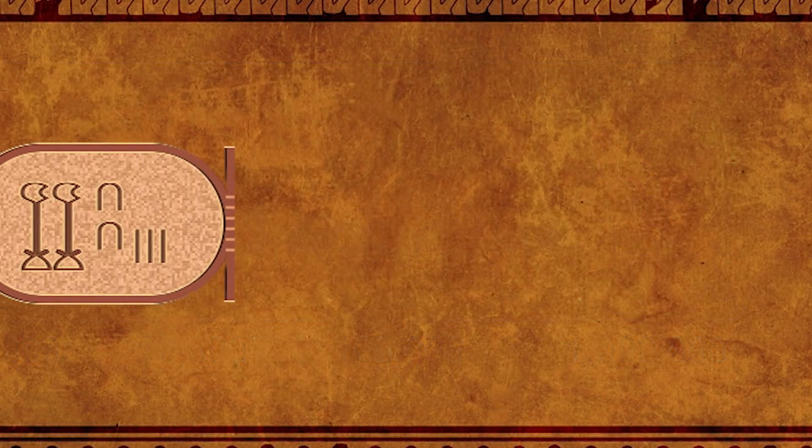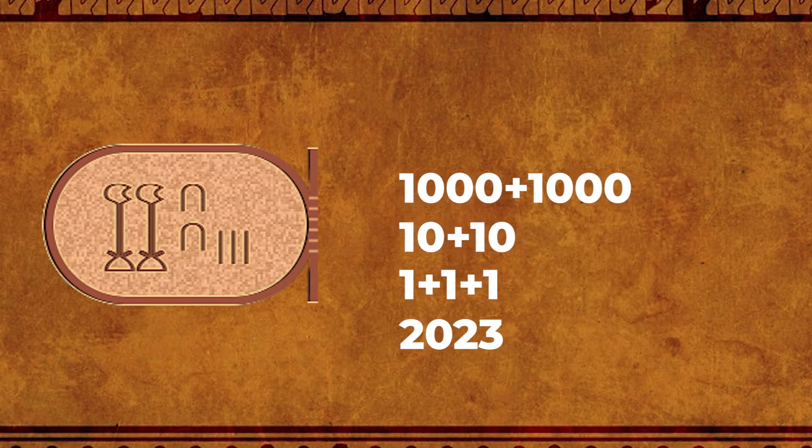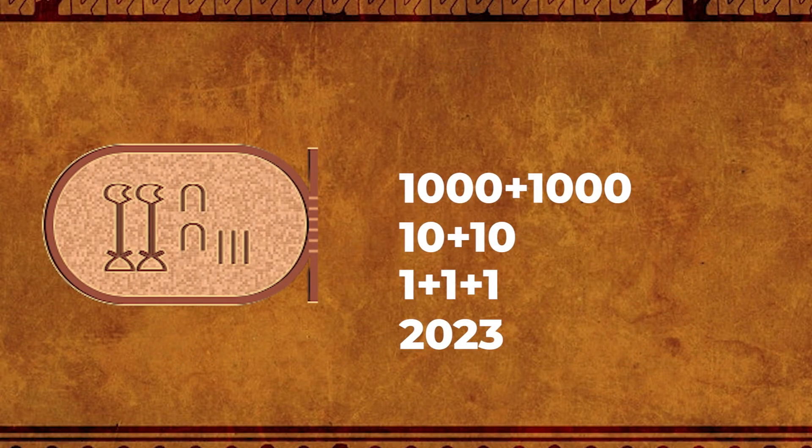For example, to write 2023, you would use two water lilies, two cattle hobbles, and three strokes.